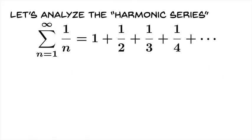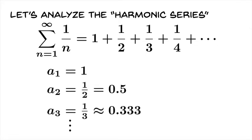So let's analyze the harmonic series, which is the series you get by reciprocating all the natural numbers and adding those together. So it's 1 + 1/2 + 1/3 + etc. Now let's take a look at the first three terms: 1, 1/2, and 1/3.